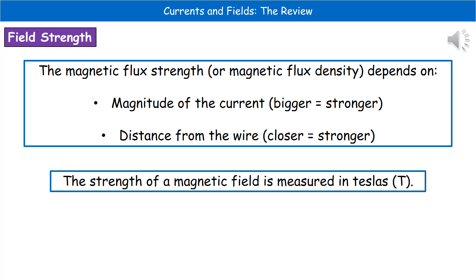There are two things that our magnetic flux strength or magnetic flux density depend upon. The first is the magnitude or size of the current. If we've got a bigger current, then we have a stronger magnetic field. The second is the distance from the wire. The closer you are to the wire itself, the stronger that magnetic flux will be.